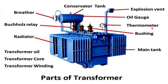Next, we have the oil gauge. The oil gauge measures the level of transformer oil in the conservator tank. It ensures there is always an adequate amount of oil to perform the cooling and insulating functions. Low levels can indicate tank leaks or other issues.